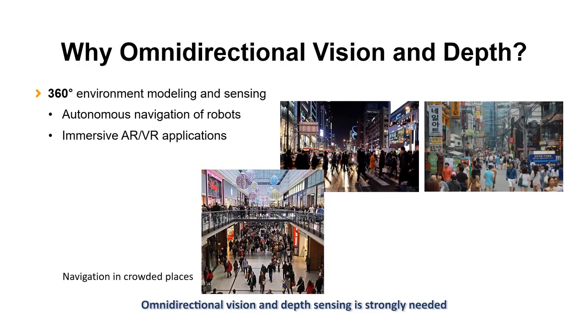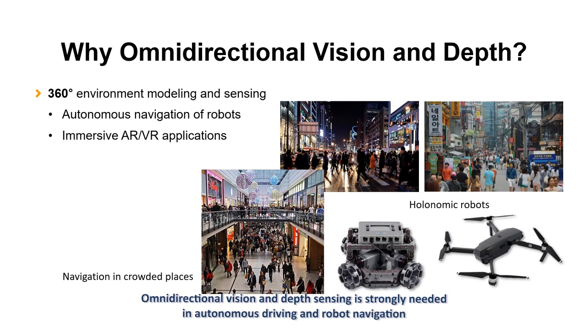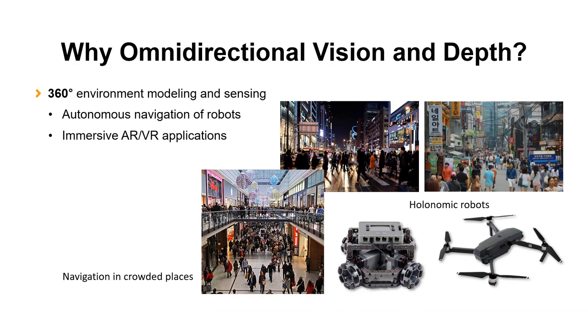Omnidirectional vision and depth sensing is strongly needed in autonomous driving and robot navigation to detect obstacles and surrounding structures. For example, when you are driving, you watch all directions, not only the front. It is also used for various AR VR applications.